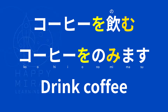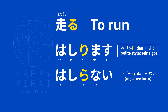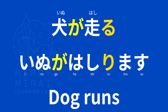Next verb: 走る (hashiru) — to run. 走ります (hashirimasu). 走らない (hashiranai). Example: 犬が走る (inu ga hashiru) — inu means dog — 犬が走ります (inu ga hashirimasu).